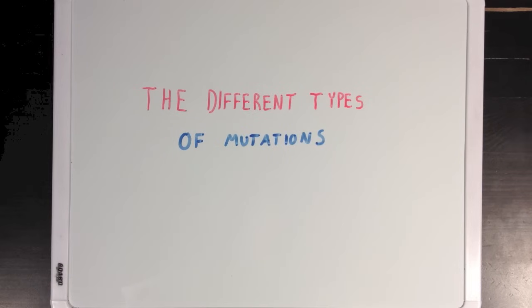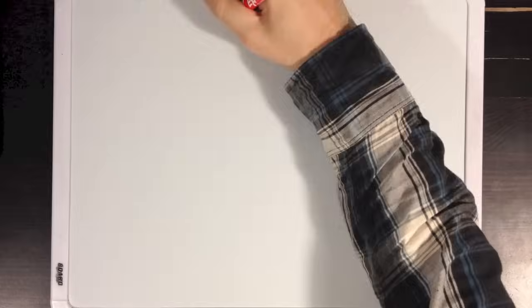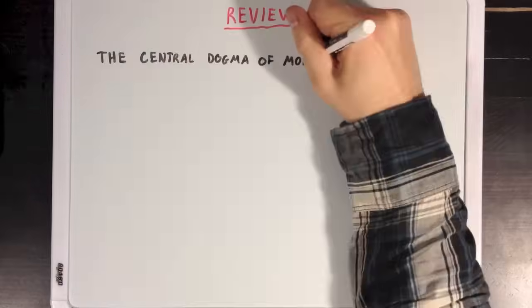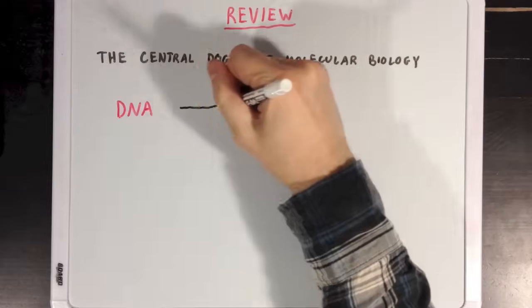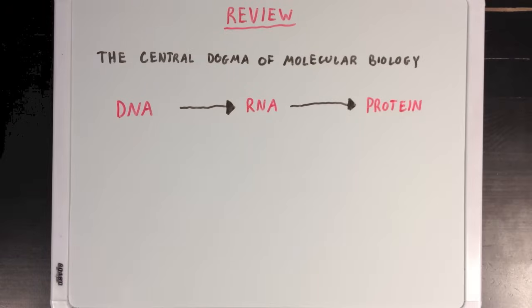Today we're going to talk about the different types of genetic mutations that you would find in a cell. But first, I want to review the central dogma of molecular biology and how the genetic information of a cell is stored in the form of DNA, which is then transcribed to form RNA, and then translated to generate protein.